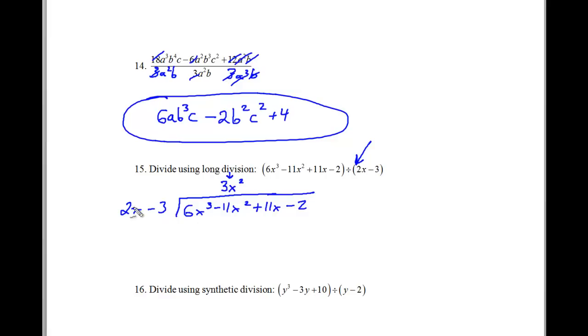Now this 3x squared is going to be multiplied by this binomial. And so that's going to give me 6x cubed. And 3 times negative 3 is negative 9x squared. Now I'm going to subtract. So to subtract, I'm going to do some swipe swipe. And I'm going to quickly change colors for this.